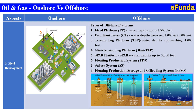For offshore, the types of offshore platforms are: first, fixed platform (FP), water depth up to 1500 feet; second, compliant tower (CT), water depth between 1000 to 2000 feet; third, tension leg platform (TLP), water depth approaching 4000 feet; fourth, mini tension leg platform (mini TLP); fifth, spar platform, water depth up to 3000 feet; sixth, floating production system (FPS); seventh, subsea system (SS); eighth, floating production storage and offloading system (FPSO). All these platforms and their structures are shown in the picture for ready reference. This is how field development is managed in offshore facilities.